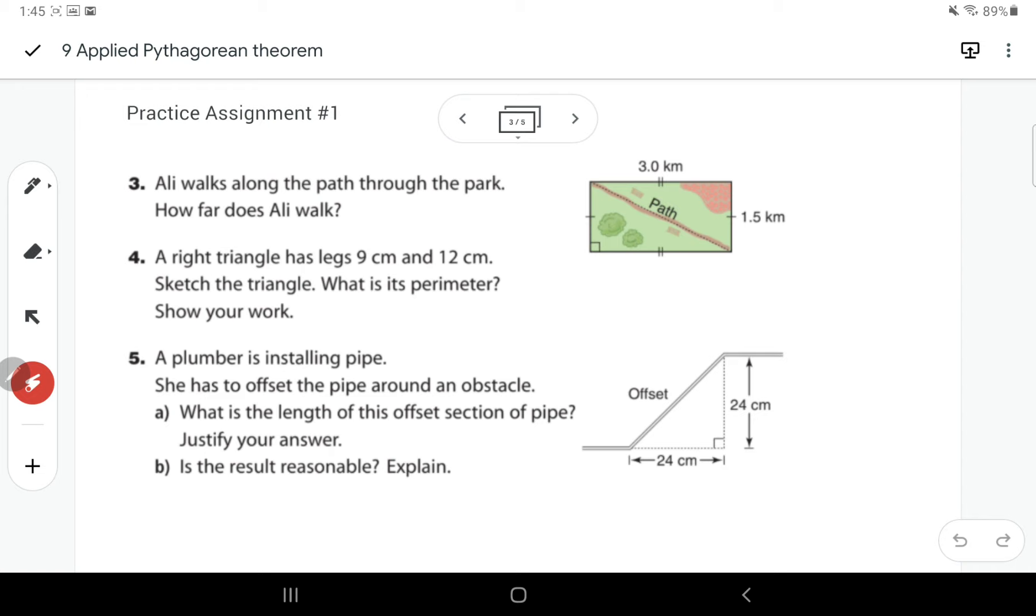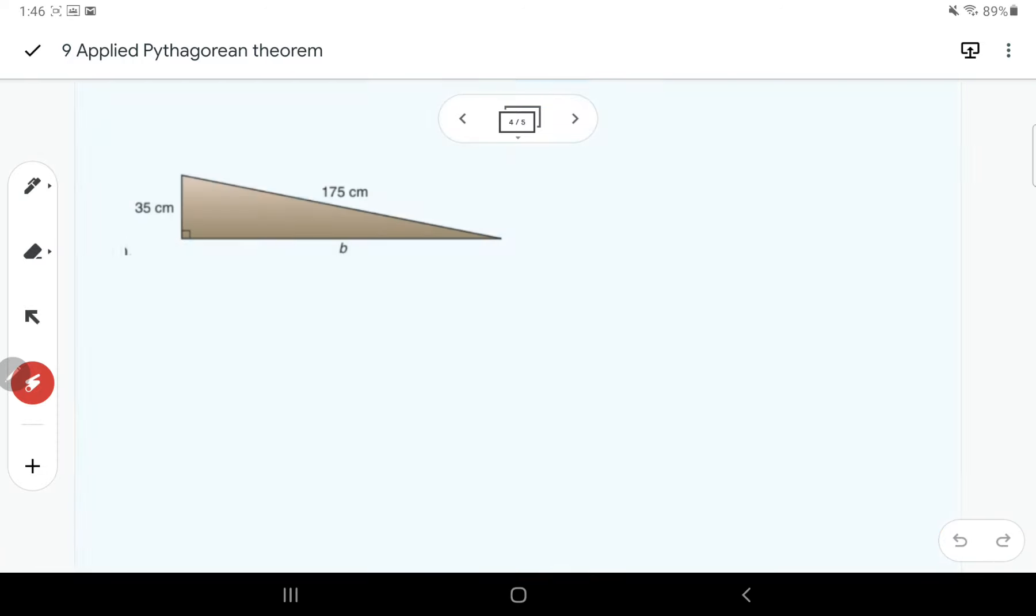And then there's some word problems where you have to kind of use a diagram and you're going to figure out, for instance, here the length of the path. Here the length of that pipe. So when you're solving a word problem, it's going to work the same, but you just have to use that diagram or draw a diagram and then write a statement to answer the question. So you can go through and do those two slides of homework for practice questions.